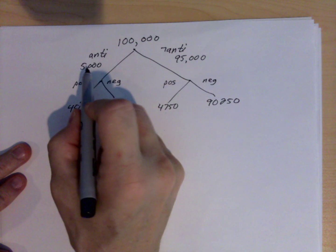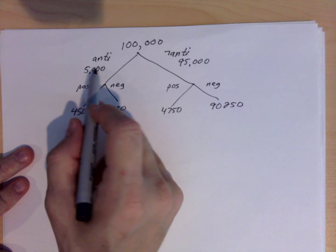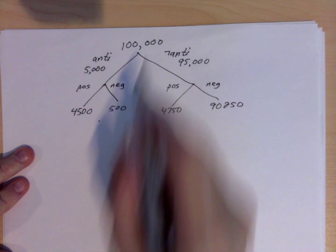Alright, so 100,000 has been divided into 5,000, 95,000. It's still 100,000. And then each of these numbers has been split, so the bottom row still adds up to 100,000.